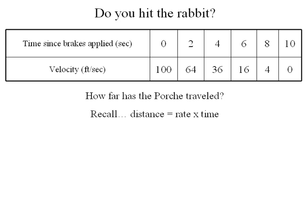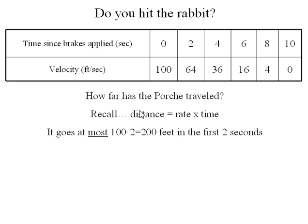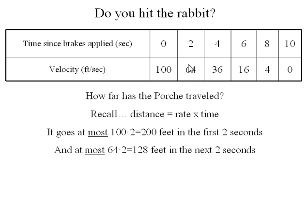Remember one thing: distance equals rate times time. For these first two seconds, what we might want to look at is what is the furthest we possibly could have gone. The fastest we were going during the first two seconds is 100 feet per second, and if we did that for two seconds, we would travel 200 feet. The same thing for the next two seconds: the fastest we're traveling is 64 feet per second for two seconds, so the furthest we can go in the next two seconds is 128 feet.